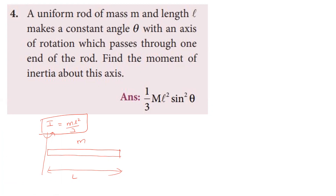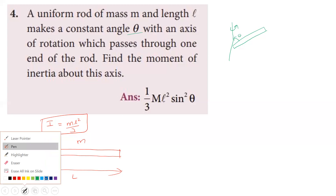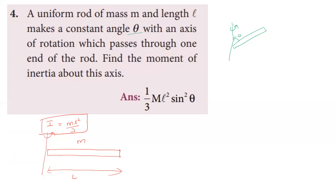The rod of mass m and length l makes a constant angle theta with the axis of rotation. We find the perpendicular distance from the axis. This forms a right-angle triangle with points A, B, and C. BC is the length l, and AC is the perpendicular distance. The effective length l' is the opposite side.